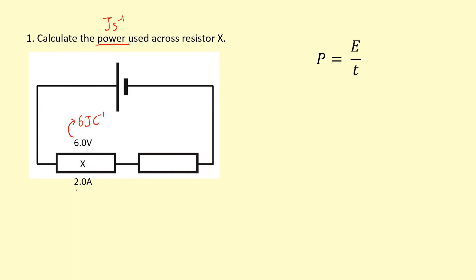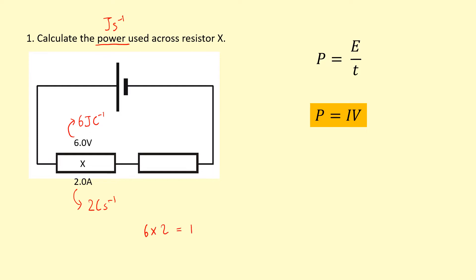I've got 2 amps — that's another way of saying that 2 coulombs of charge flow past per second. So if 2 coulombs of charge flow past per second and each coulomb of charge transfers 6 joules of energy, I can figure out how much joules of energy is transferred per second simply by multiplying them together. I'm using the equation power equals current times voltage, so 6 times 2 gives me 12 watts.